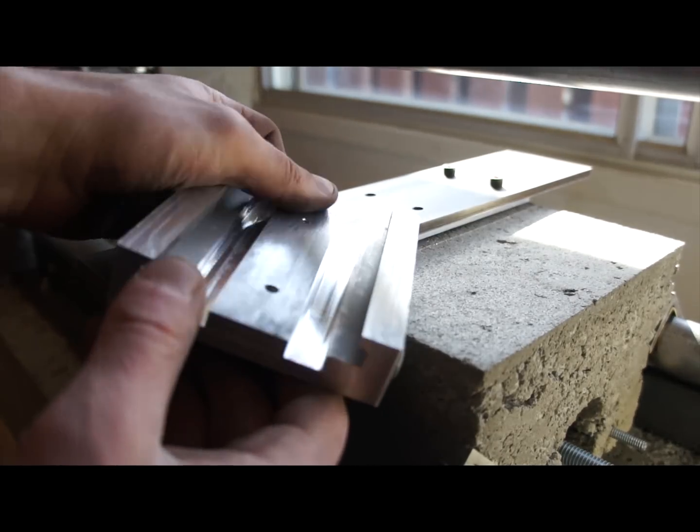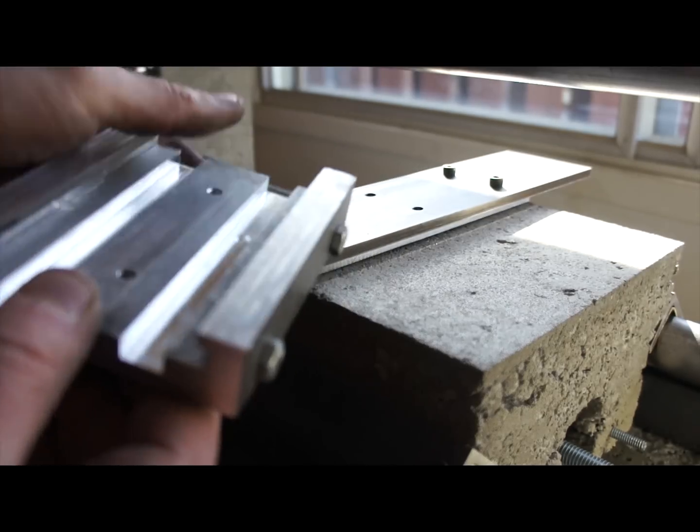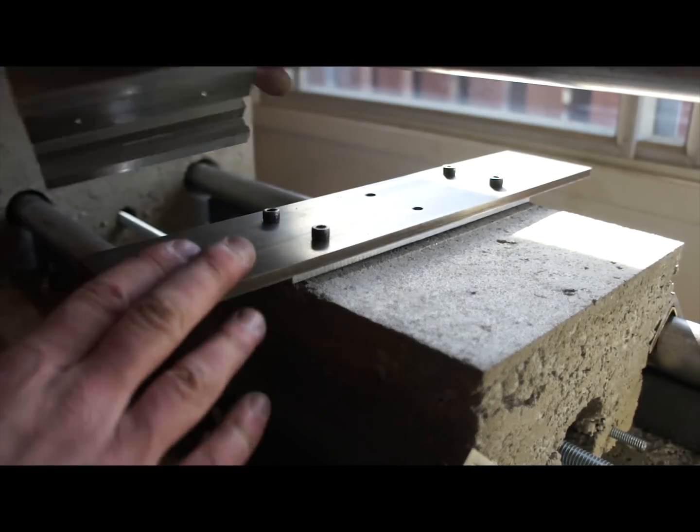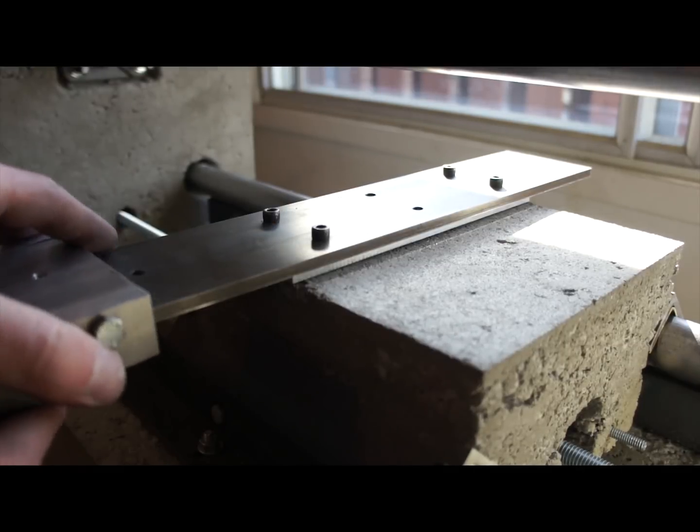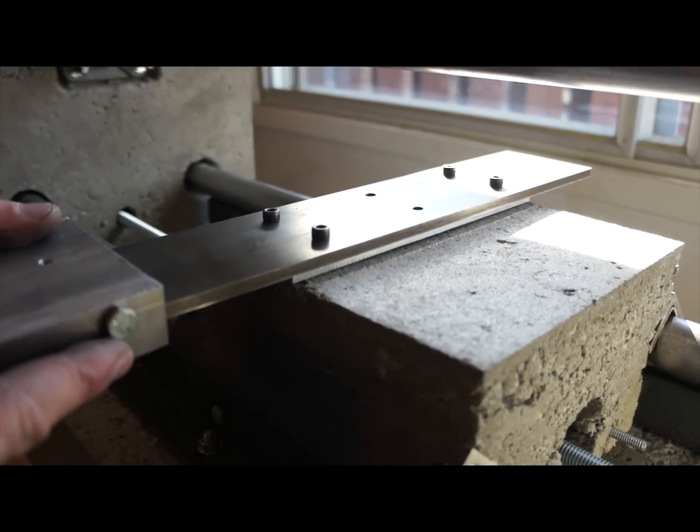One thing I probably could do is take off this middle portion because right now that's a reference surface as well which needs to be lapped. But the more surface I can have touching this thing the more rigid the carriage will be, so I think I'm going to leave it for now.